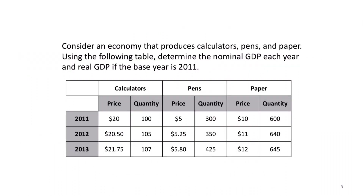Let's go through an example to make this a little bit more concrete. Consider an economy that's producing three goods: calculators, pens, and paper. The table gives us the price and the quantity of each good over the course of three years — 2011, 2012, and 2013. We want to calculate nominal GDP, real GDP, and the percentage change in each from one year to the next.